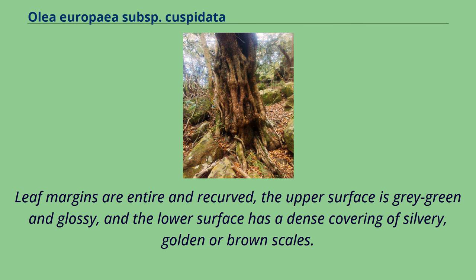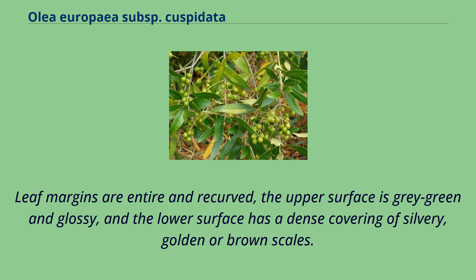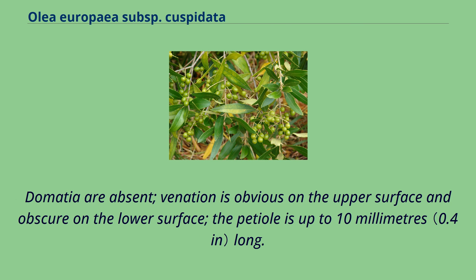Leaf margins are entire and recurved, the upper surface is gray-green and glossy, and the lower surface has a dense covering of silvery, golden, or brown scales. Domatia are absent, venation is obvious on the upper surface and obscure on the lower surface, and the petiole is up to 10 millimeters long.